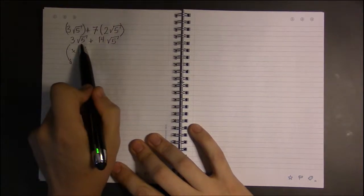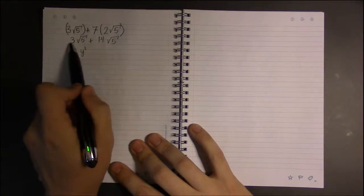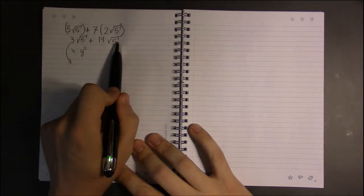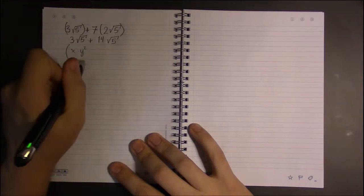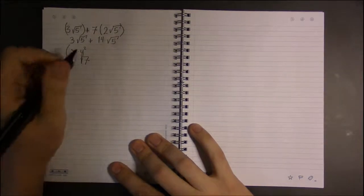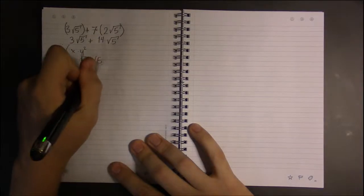So 3 times this weird number plus 14 times that weird number, 3 plus 14 is 17 times this weird number.